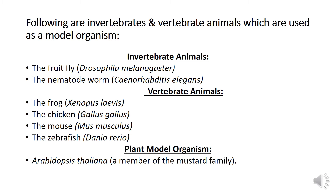For vertebrate studies, the most common organisms used are the frog Xenopus laevis, chicken Gallus gallus, mouse Mus musculus, and zebrafish Danio rerio. The plant model organism, which is a member of the mustard family, Arabidopsis thaliana, is also most commonly used.